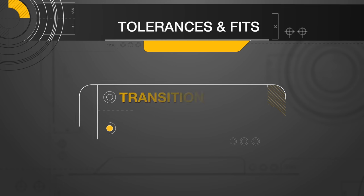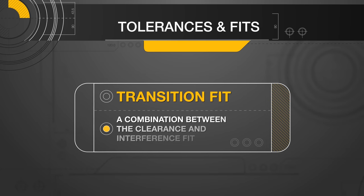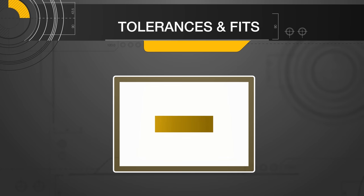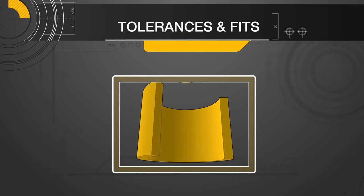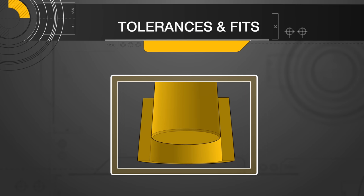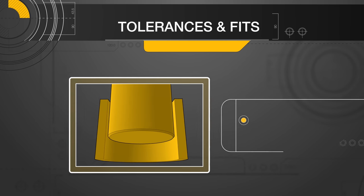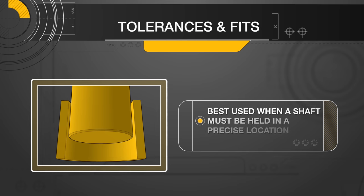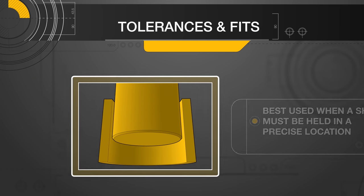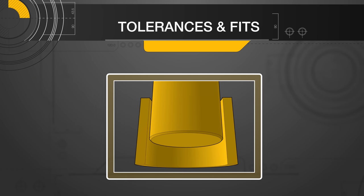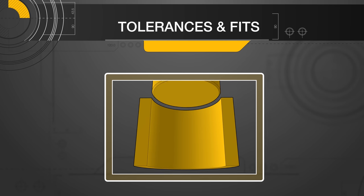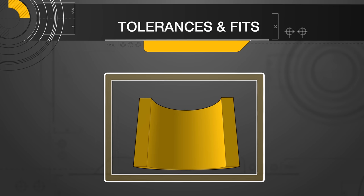The transition fit is a combination between the clearance and interference fit. Depending on the actual dimension of the shaft and bore, it is possible that either could occur. This fit is best used when a shaft must be held in a precise location. If interference should occur, it will not be to the extent where disassembly is overly difficult.